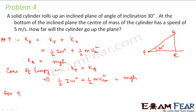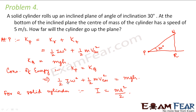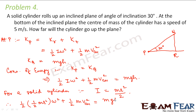For a solid cylinder, moment of inertia I = MR²/2. Substituting into the energy equation: ½ × (MR²/2) × ω² + ½MV² = Mgh, which gives ½ × (1/2)MR²ω² + ½MV² = Mgh.